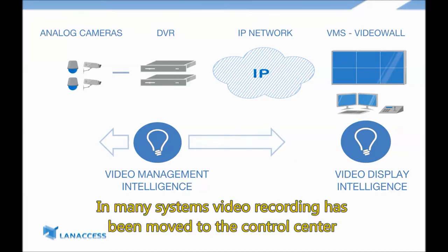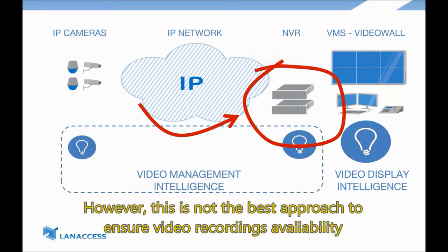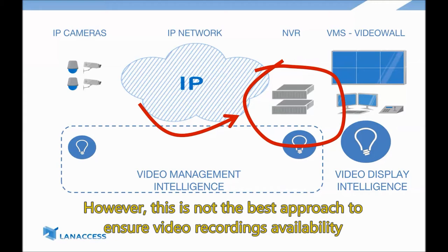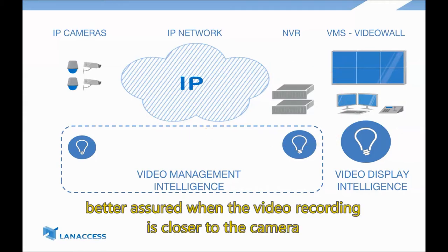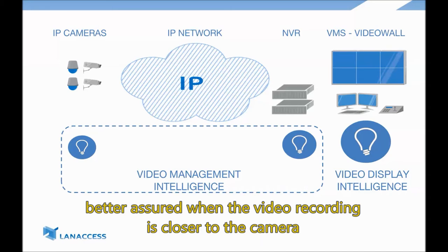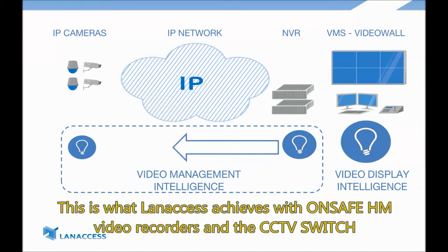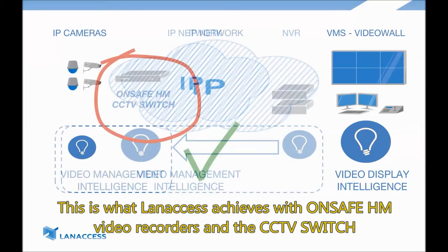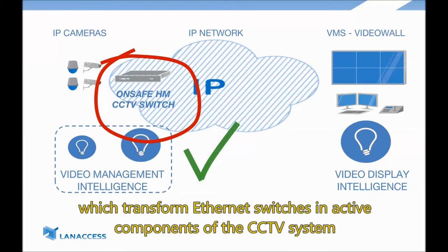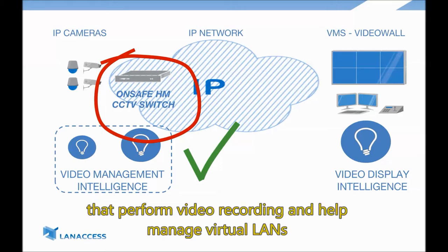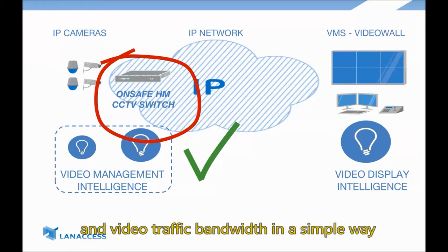In many systems, video recording has been moved to the control center to network video recorders. However, this is not the best approach to ensure video recordings availability, better assured when the video recording is closer to the camera. This is what LAN Access achieves with OnSafeHM video recorders and the CCTV switch, which transform Ethernet switches into active components of the CCTV system that perform video recording and help manage virtual LANs and video traffic bandwidth in a simple way.